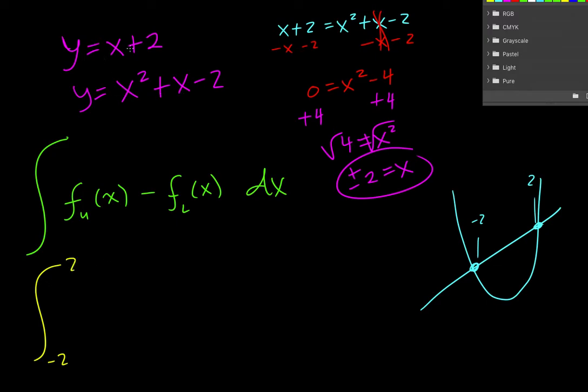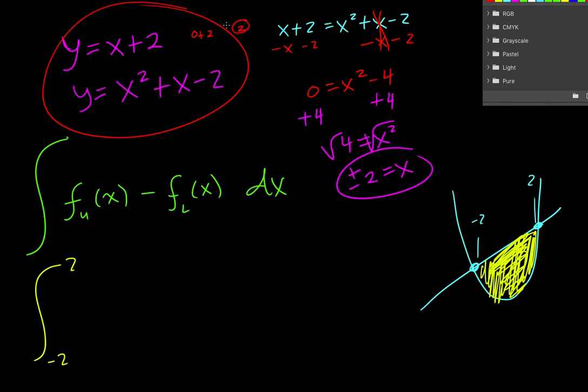Now because I know this is right-side-up parabola, and this is a positive sloped line, when I'm looking at this I know that the line is above it. But if you're ever not sure, if you can't conceptualize what these look like, you can always choose any number in between here, plug it in for both functions, and see which one gives you a higher value. Now I'm going to plug in 0. So if I plug in a 0 to the top, I get 0 plus 2, and so the answer is 2. If I plug in a 0 here, I get 0 squared plus 0 minus 2, and those simplify to negative 2. Since 2 is greater than negative 2, this is the top function.